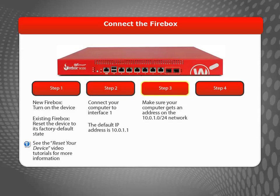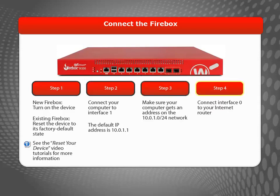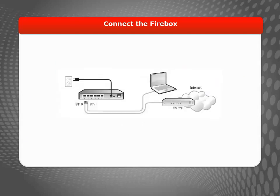After you connect your computer to Interface 1, make sure your computer gets an address on the 10.0.1.0/24 network. Connect Interface 0 to a router or network that has Internet access. When you have everything connected, it should look like this.